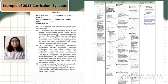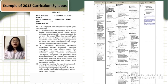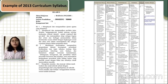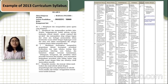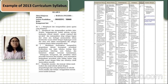Now, this is the example of the 2013 curriculum syllabus. It consists of nine components that were explained before. For example, there are mata pelajaran or subject identity, satuan pendidikan or school identity, class, kompetensi inti or core competencies, kompetensi dasar or basic competencies, materi pokok or main material, pembelajaran or learning, penilaian or assessment, alokasi waktu or time allocation, and sumber belajar or learning resources. That's all about the components of the 2013 curriculum syllabus. The components of the 2013 revised curriculum syllabus will be explained by my friend. Thank you.